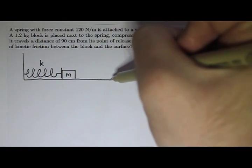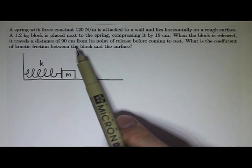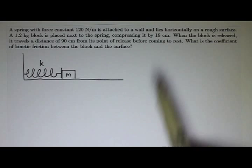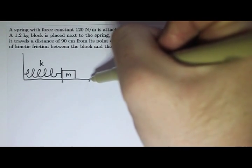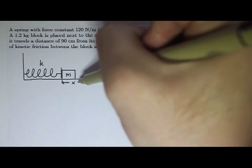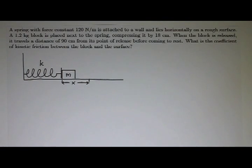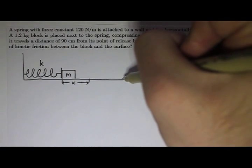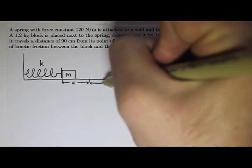And the block is released and it travels a distance of 90 centimeters from its point of release before coming to rest. So let's say that this distance is how much the spring was compressed, because we know it was compressed from its equilibrium position, where it would like to be. And then let's say that the block moved a distance d beyond the equilibrium position.